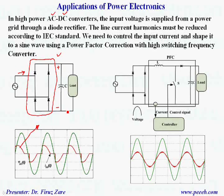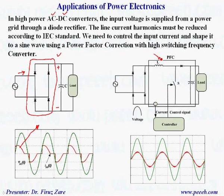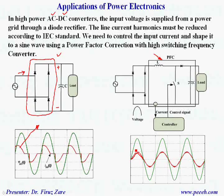Using a high-frequency converter operating in DC-DC converter mode, and using this system, we measure the line current and try to shape it to a sine wave in phase with the voltage. In this case, we can improve the power factor and also control the harmonics.